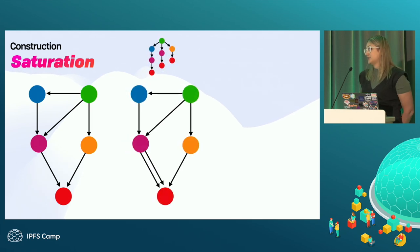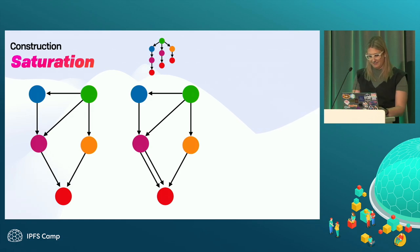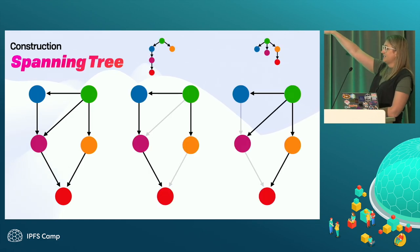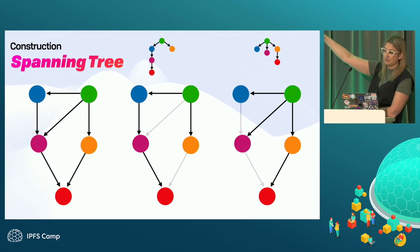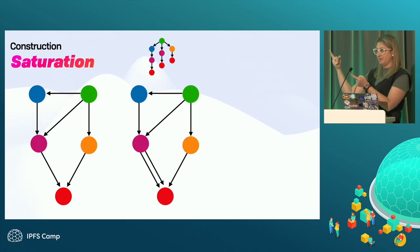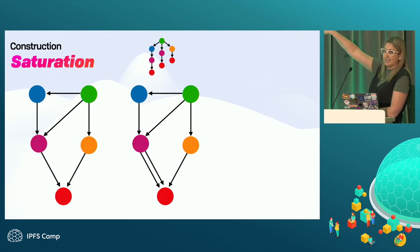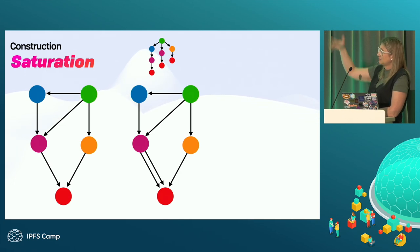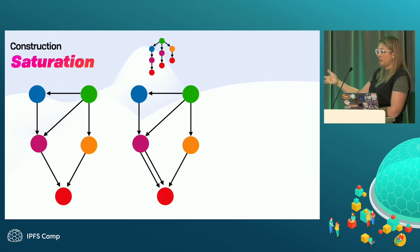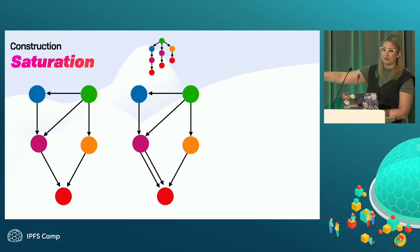Saturation is where you just duplicate links everywhere. This is the easiest to read because in the spanning tree the orange node still has a link you need to follow visually. With saturation, we just inline the data everywhere it shows up. This is way less space-efficient, but if you're reading it as a human it's great — you can just read and follow down as you go. And when we pull this back into IPLD, it'll deduplicate all those links for you.